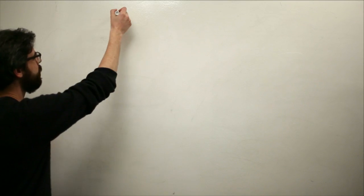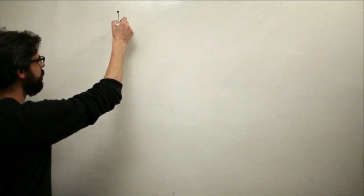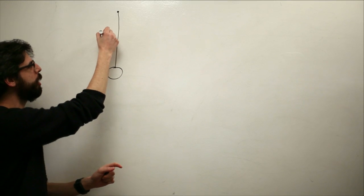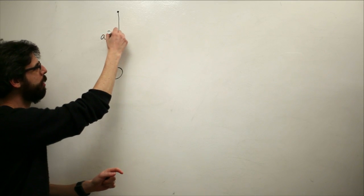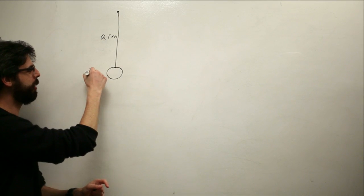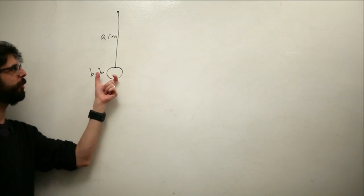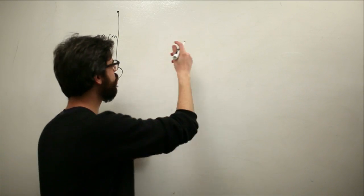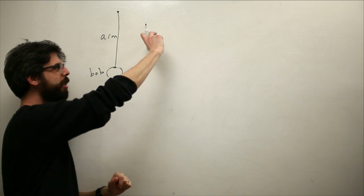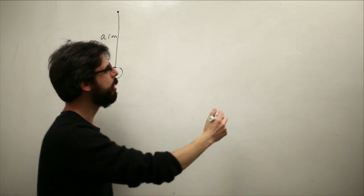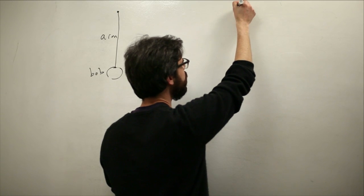I want to draw the pendulum — I'm going to start by drawing it in two different ways. This is a diagram of a pendulum at rest. There is this thing called an arm, and this thing called the bob. So this is our pendulum at rest. If we were to lift it up over here and let go, it would swing back and forth like that.